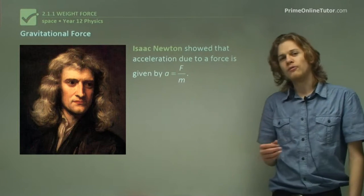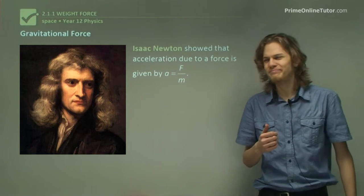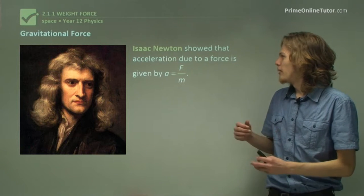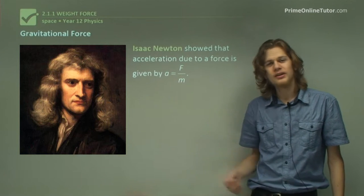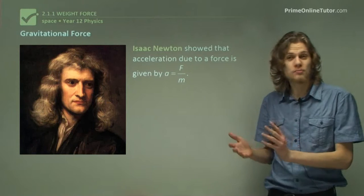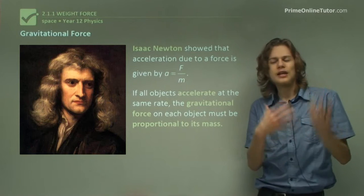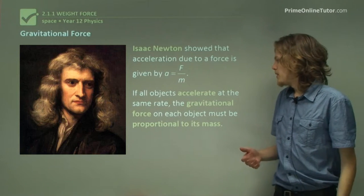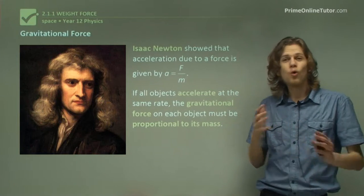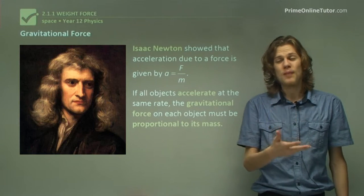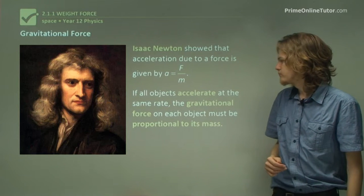So Isaac Newton figured out a way to explain this. He came up with something called gravity, which I'm sure you've heard of. So he showed that the force on an object is related to its acceleration by this equation. Acceleration equals the force applied over the object's mass. And so he said to himself, if all objects accelerate at the same rate, then that means that there must be a force on it. But if the acceleration is going to be the same for all the objects, then the force has to be a multiple of its mass. So that means that the mass will cancel out.